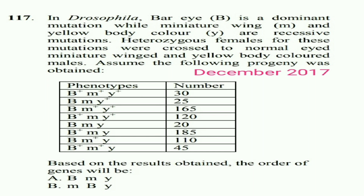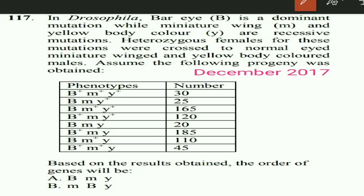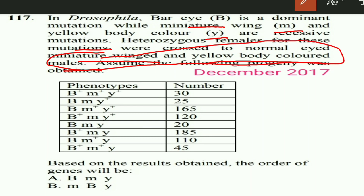The first question is from December 2017. In Drosophila, Bar (B) is a dominant mutation while miniature wing (small m) and yellow body color (small y) are recessive mutations. Heterozygous females for these mutations were crossed to normal-eyed, miniature-winged, and yellow body color males. All three traits are recessive in character and this is a test cross. Based on the result table provided, we have to find the order of the genes and also find the genetic distance between b and y.